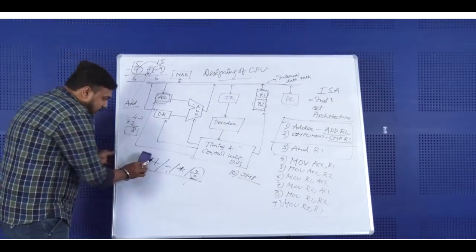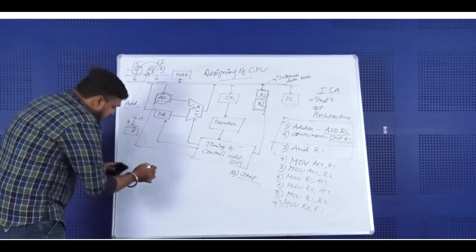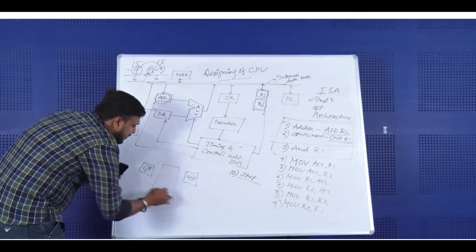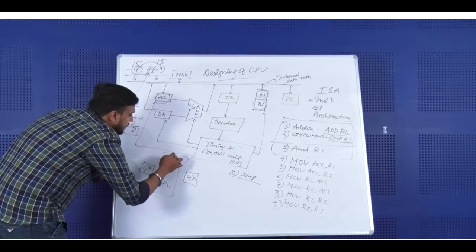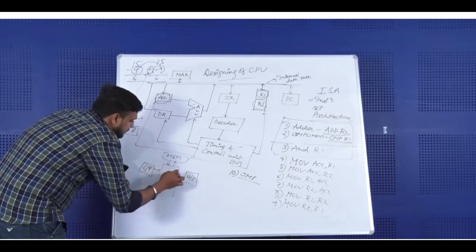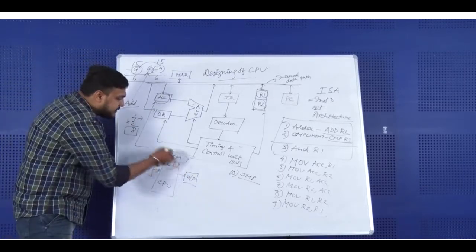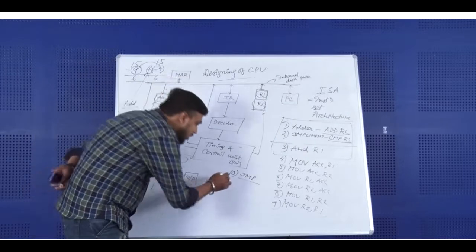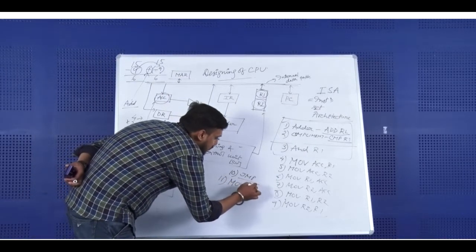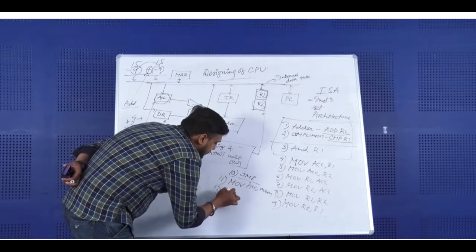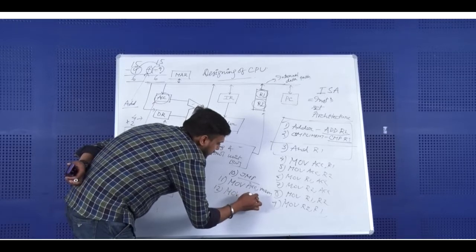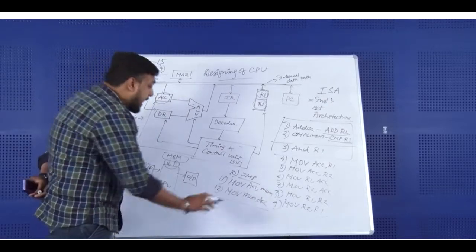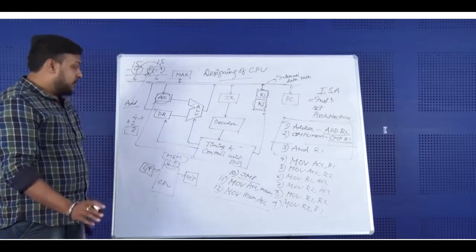Looking at the basic organization of a computer: here is the input device, here is the output device, here is the CPU, and here we have memory. The arrows are bidirectional — meaning we need both read and write operations. So another operation is needed: MOV Accumulator Memory — which is a memory write operation — and MOV Memory Accumulator — which is a memory read operation.